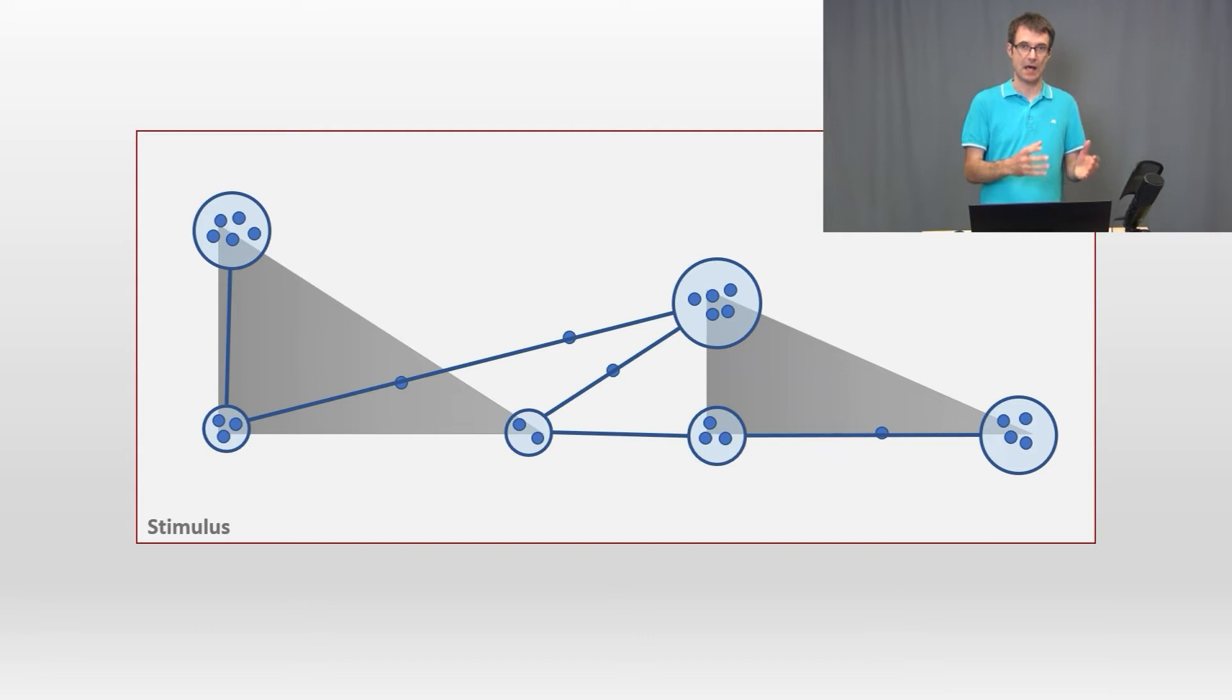Fixations are connected by saccades. And this whole structure is called scan path connecting gaze points, fixations and saccades.